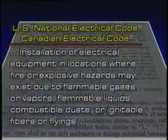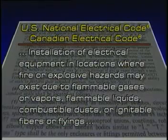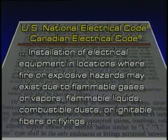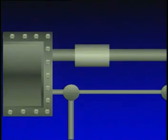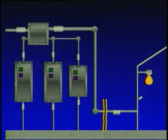The U.S. National Electrical Code and Canadian Electrical Code describe the requirements for the installation of electrical equipment in locations where fire or explosive hazards may exist. Both codes require that explosion-proof enclosures housing arcing and sparking devices be sealed off to prevent propagation of flames or gases through the conduit system and to minimize explosion pressures.